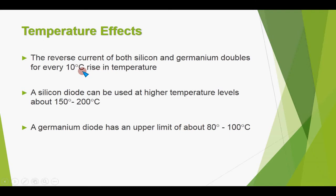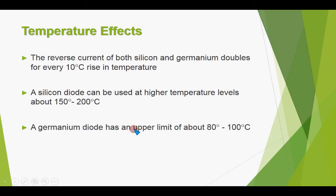Since silicon has much less reverse current than germanium — in the microamperes range while germanium is in the milliamperes range — doubling both values still leaves silicon's reverse current much lower. A silicon diode can be used at higher temperature levels, about 150°C to 200°C, while the germanium diode has an upper limit of about 80 to 100°C. So when operating at higher temperatures, silicon is clearly preferred.